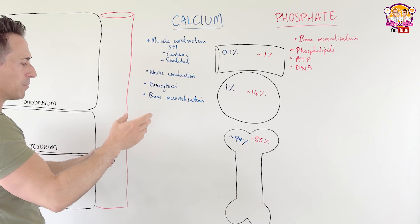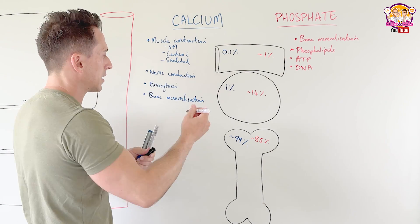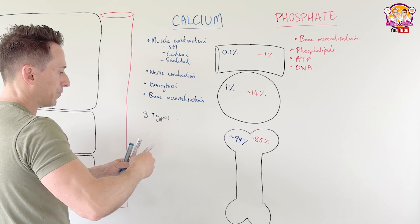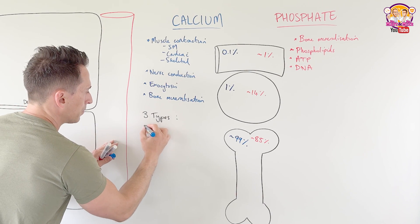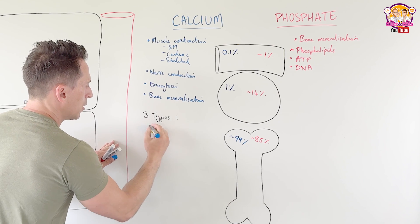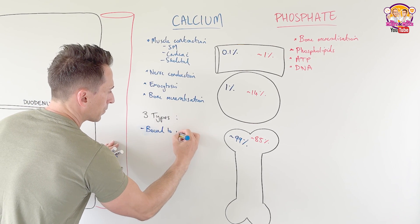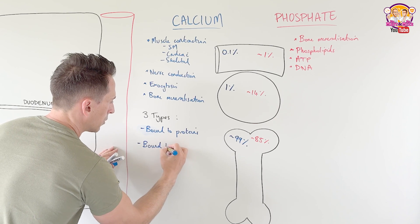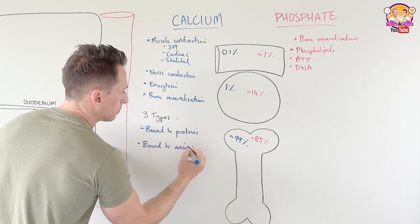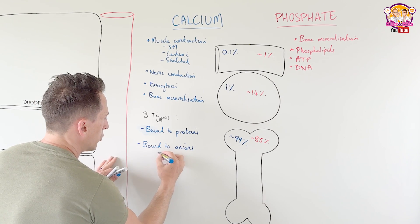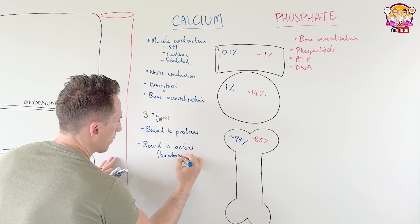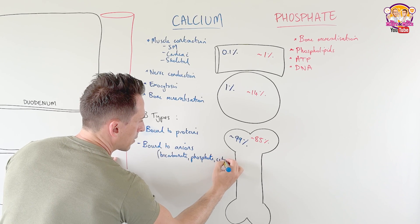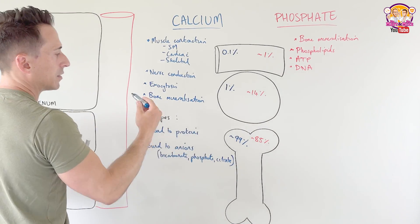When we have a look at calcium, it's available in three different ways. Three types of calcium is available. First, you've got calcium bound to proteins. We've got calcium bound to anions. What are anions? They're negatively charged substances. So this includes bicarbonate, phosphate and citrate are the most common anions that calcium is bound to. And then you've got free calcium in the form of its ionized form.